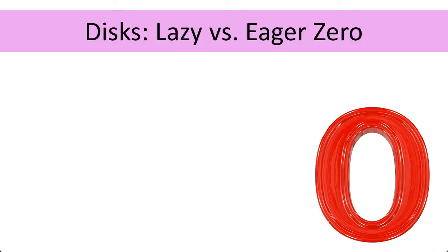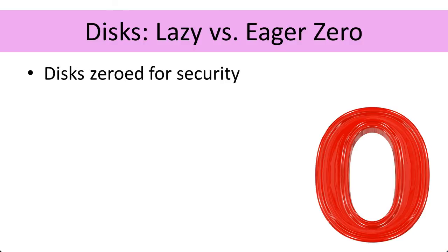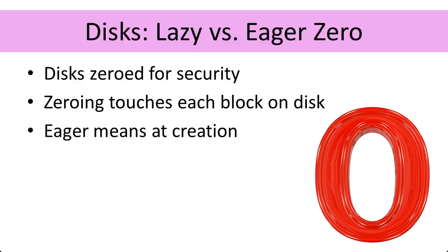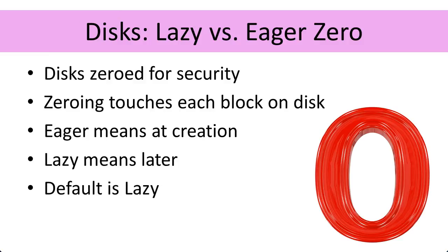So, lazy versus eager zeroing of your disks. Disks are zeroed for security to get rid of any latent data that was underneath them. It does touch every block on the disk when we zero it. VAAI absolutely helps us there — the storage array can do it rather than having to transfer all of those zeros from the ESX server across the storage network to the storage array — but we do still have to touch every block on the disk. Eager means that we do this zeroing at the creation of the virtual machine disk, whereas lazy means it happens later on the first writes. Default is lazy. If you don't know what you're doing, stick with lazy. If you don't have a strong reason to change from the default, stick with the default.